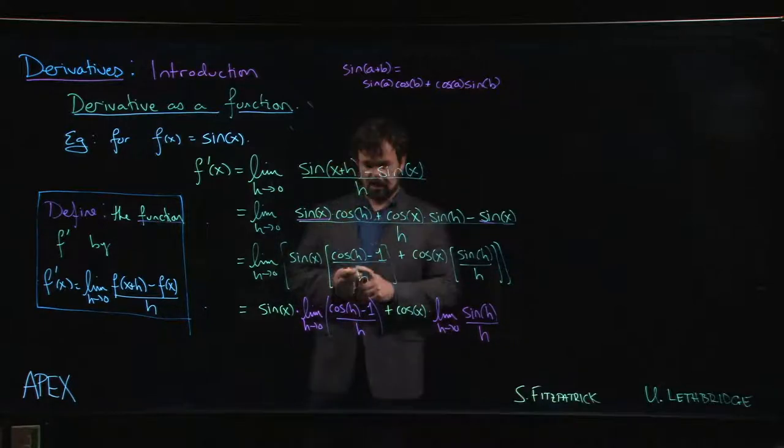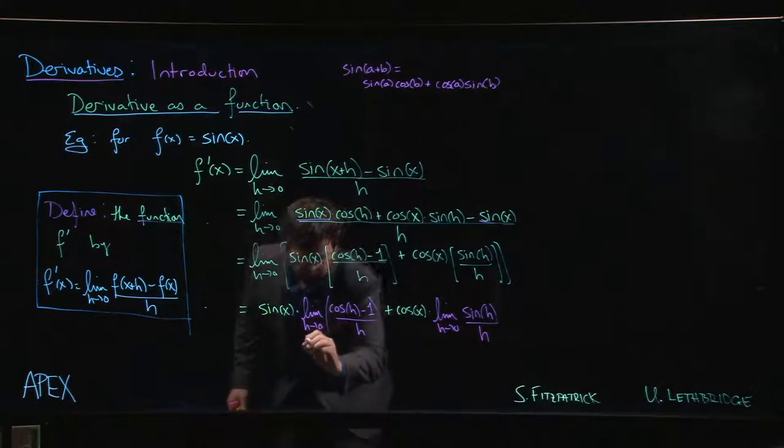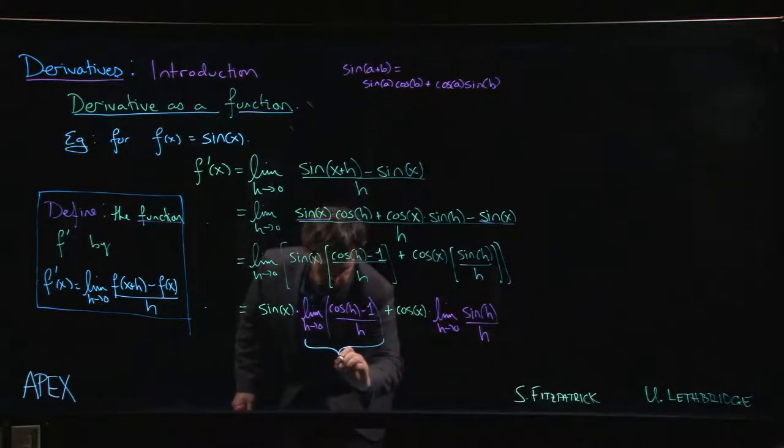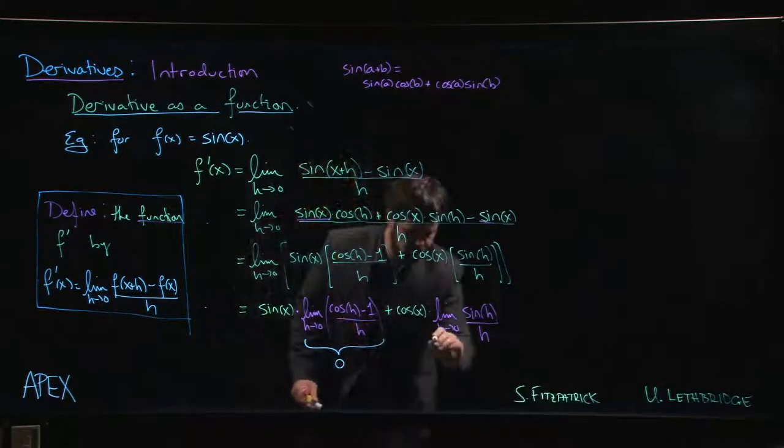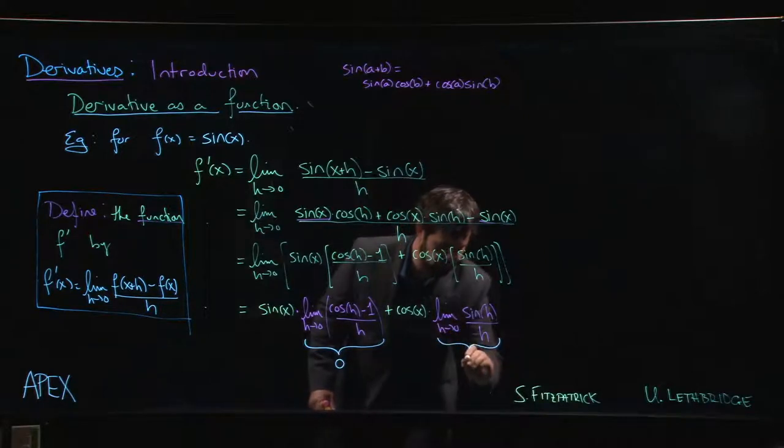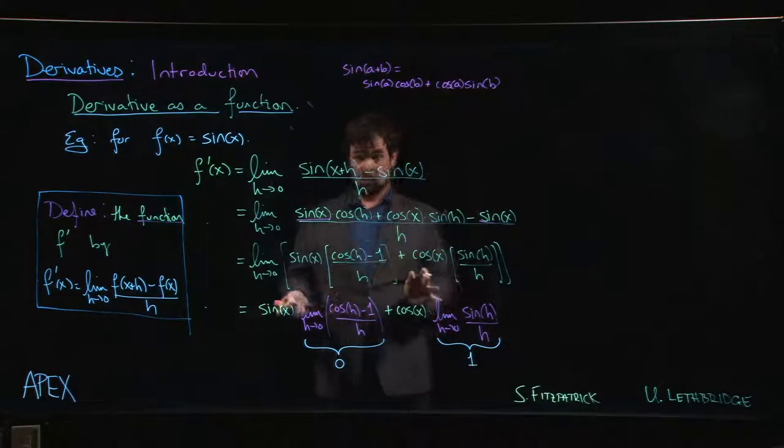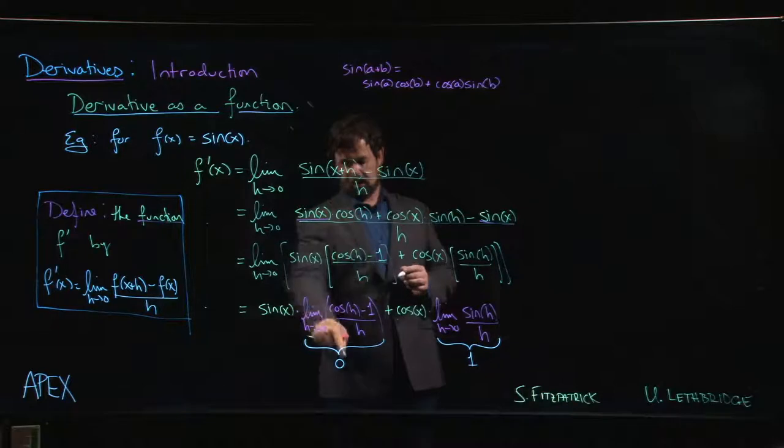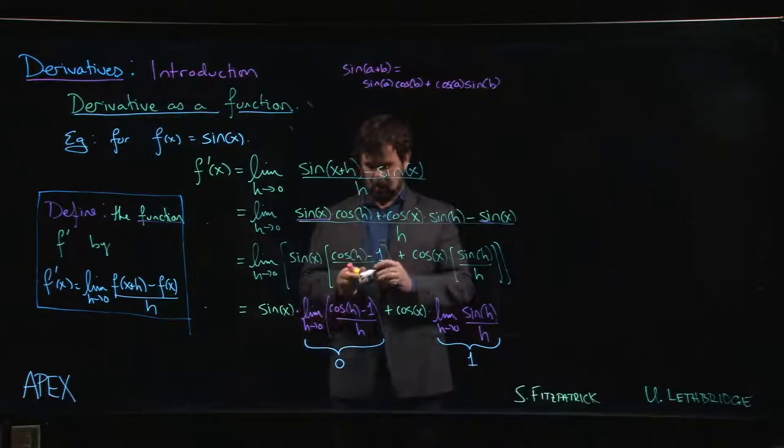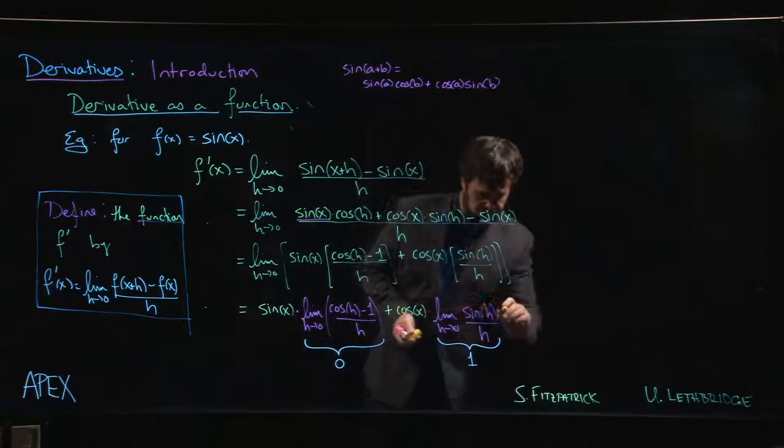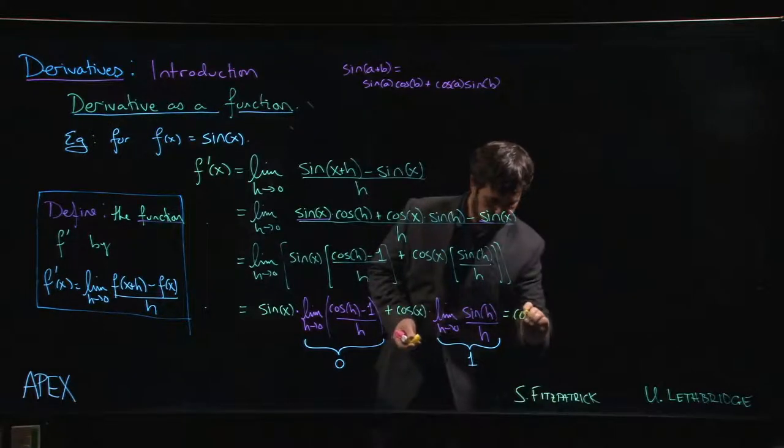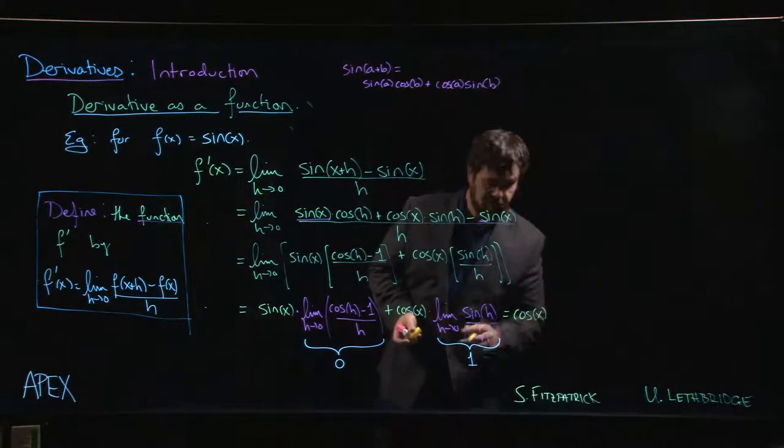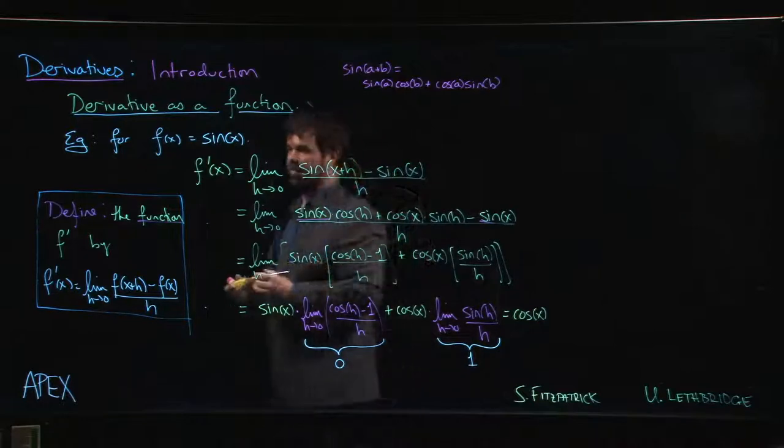So if we think back to the limits chapter, we know what these two limits are. We showed that this limit is equal to 0. We showed that this limit is equal to 1. So sine x times 0 plus cos x times 1, we get cos x. So the derivative of sine is cosine.